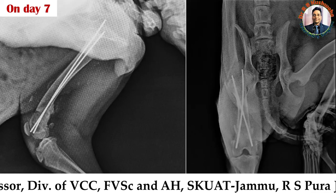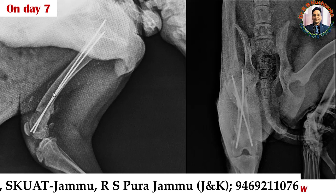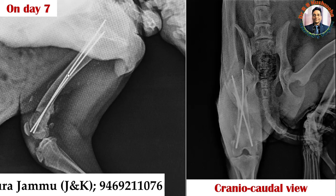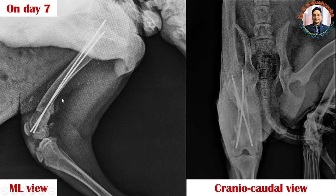This is the mediolateral view and the craniocaudal view of the same animal on day seven. If you see on day seven, the two K-wires remain in position — there is no migration either proximally or distally, and the alignment is also very good. You could see the cranial cortical alignment and the posterior alignment, and comparing with the day zero radiograph, callus formation has started.